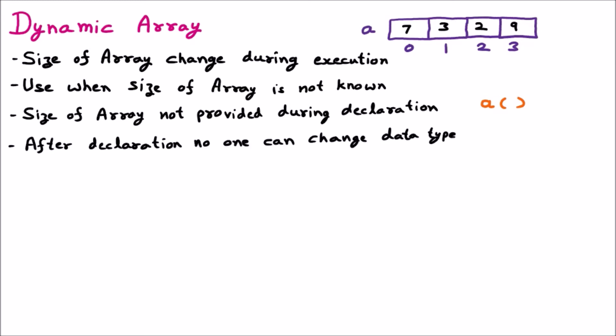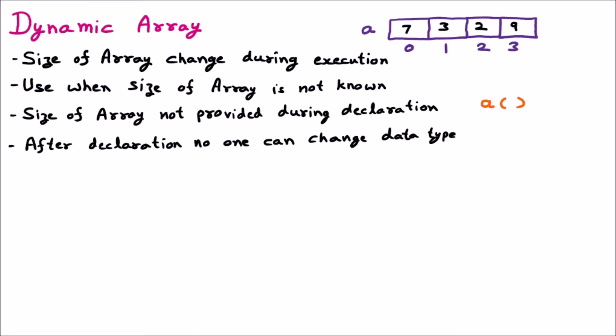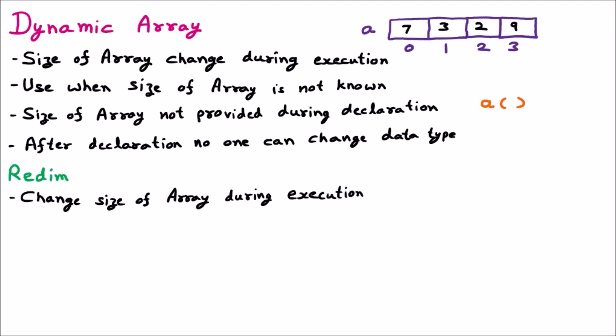Now we are learning two important terms used with dynamic arrays: the first is ReDim and the second is Preserve. ReDim is used to change the size of the array during execution. It stands for redimension. For example, we write ReDim A(3) to set size, then ReDim A(5) to extend it again. We can use multiple ReDim statements to keep extending the size during execution.